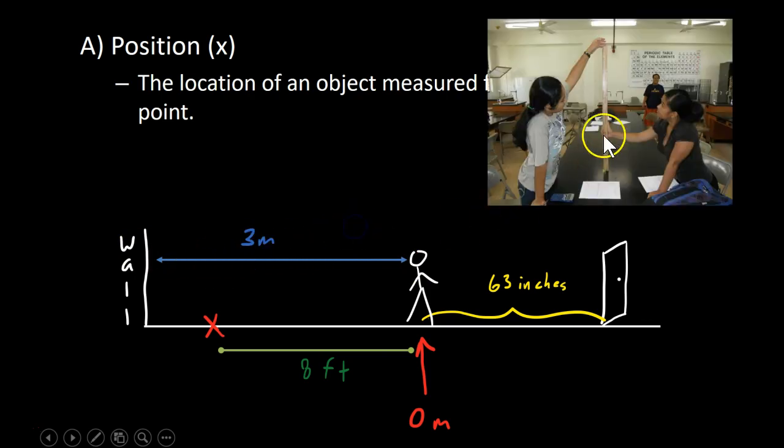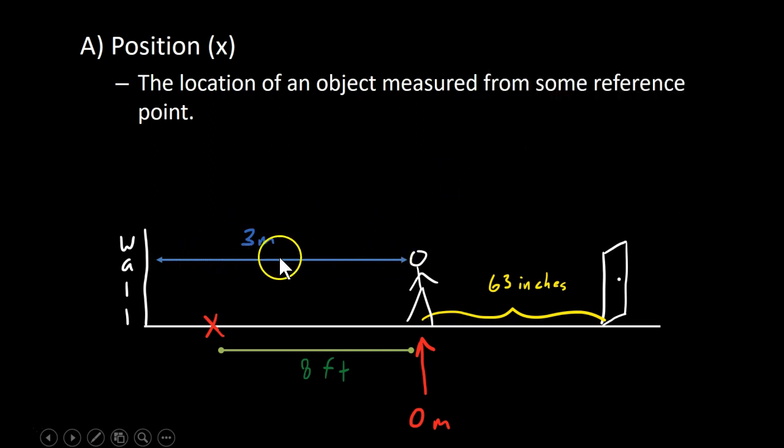this person is located three meters from the wall. If we had something known as a meter stick, and this is a meter stick right here, and this obviously represents one meter, they are three meters from the wall. That's their position. It doesn't have to be from the wall. Maybe we could say they're 63 inches. Another way we can measure position from a door. We often use meters in this class, but I just have a few different examples of ways to represent position.